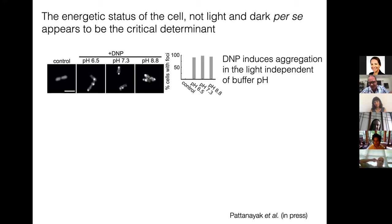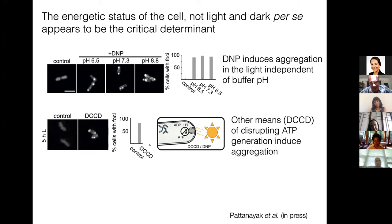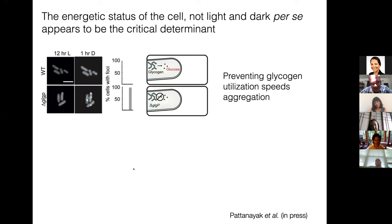We can interrupt ATP biosynthesis using things like uncouplers. So DNP, dinitrophenol, is an uncoupler that allows protons to just cross the cell membrane. If you add DNP, regardless of the pH of the media, you cause, at least for the proteins we tested, you cause them to form these sort of insoluble spots. And there are other ways you can do this too. You can directly target ATP synthase that also will cause this to happen. But maybe more importantly, you can make genetic perturbations to glycogen metabolism. Glycogen is the primary source of energy in the dark. If you interrupt glycogen breakdown, that also causes these fluorescent spots to form more quickly.